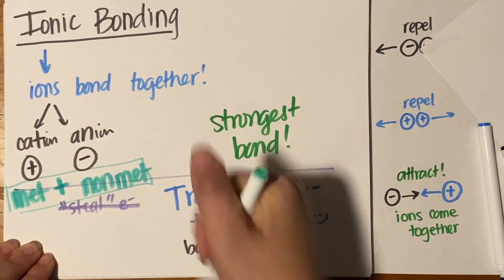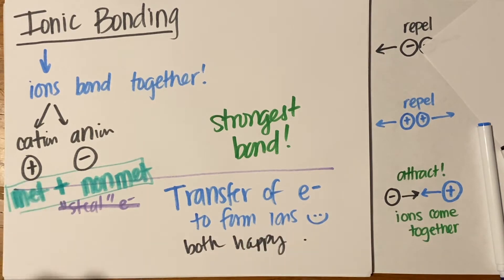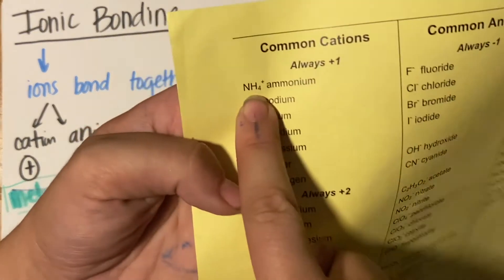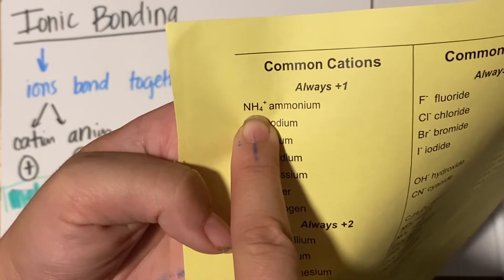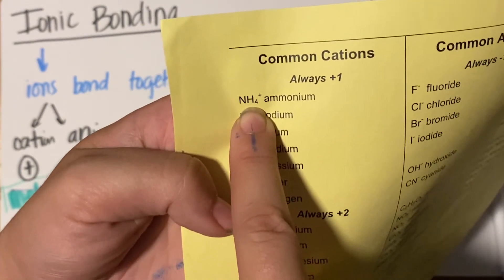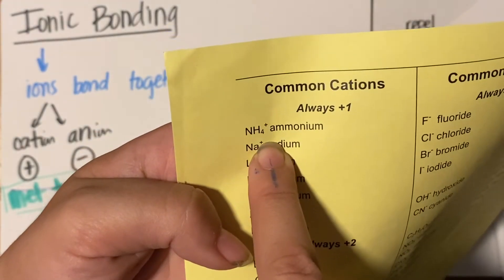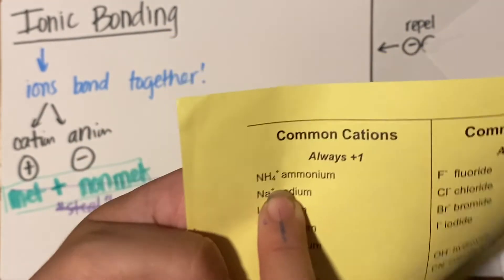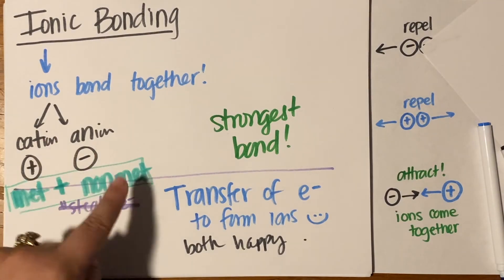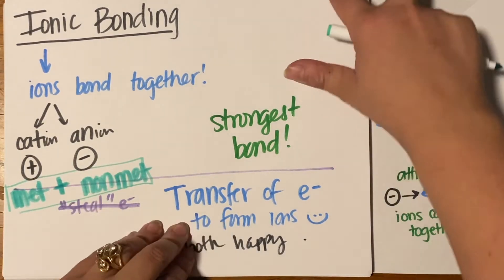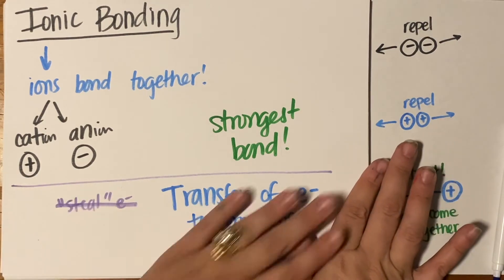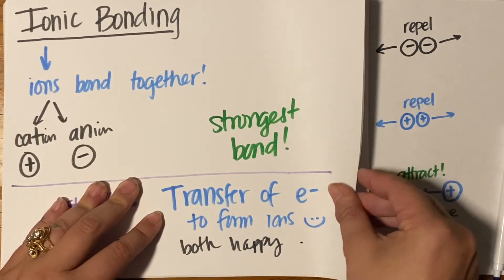If you see a compound that has a metal, you know right away it's an ionic bond. If you're looking at a compound with no metals whatsoever, almost always that's going to be a covalent bond. The only exception I can think of is ammonium — NH4 — where both nitrogen and hydrogen are non-metals, but ammonium is still a cation. Other than that, you're always going to have a metal cation and a non-metal anion. The easiest way to visualize this is to draw a Bohr model.